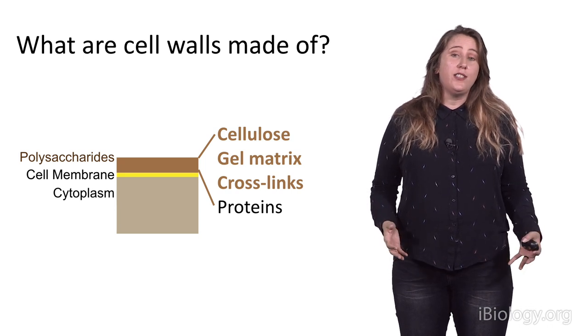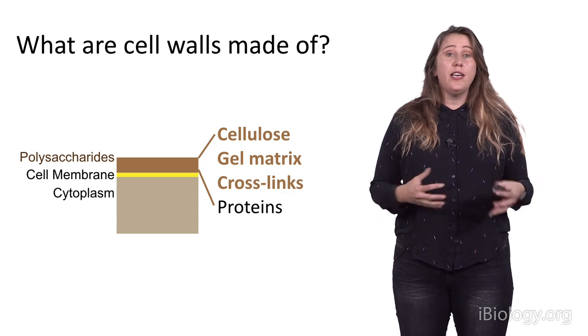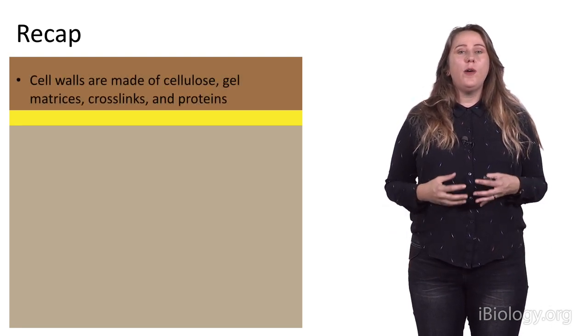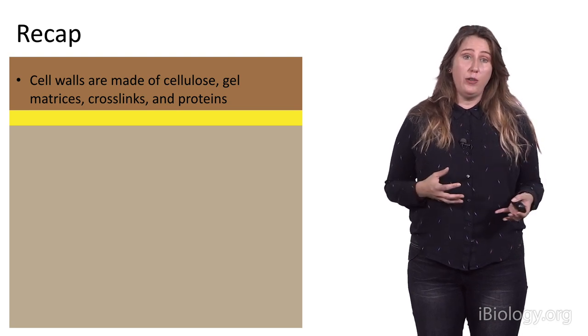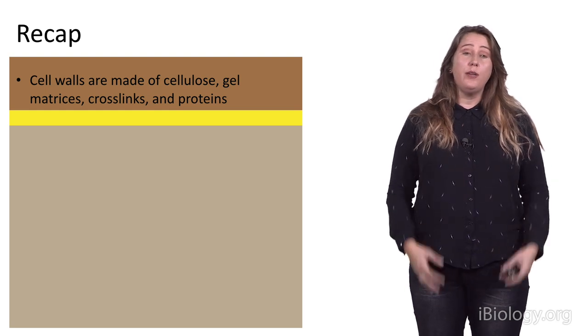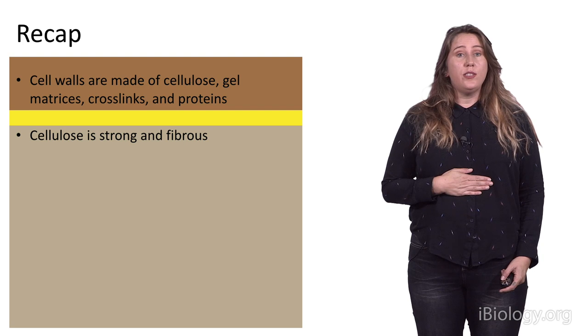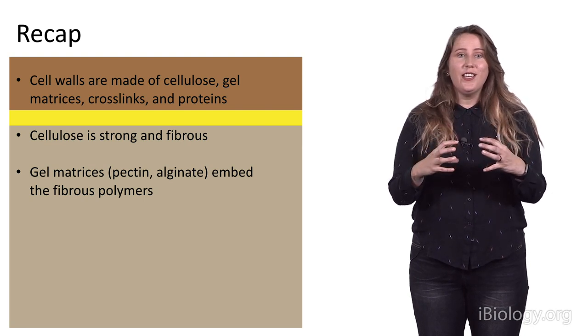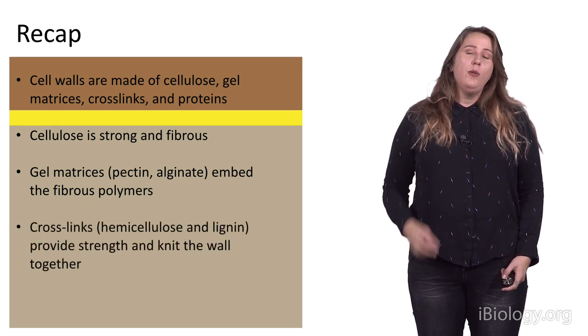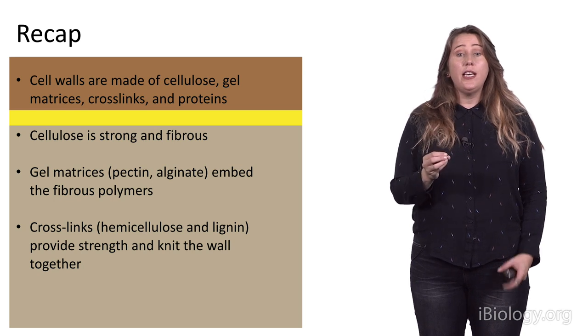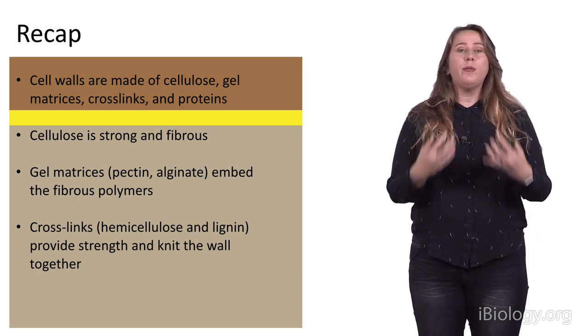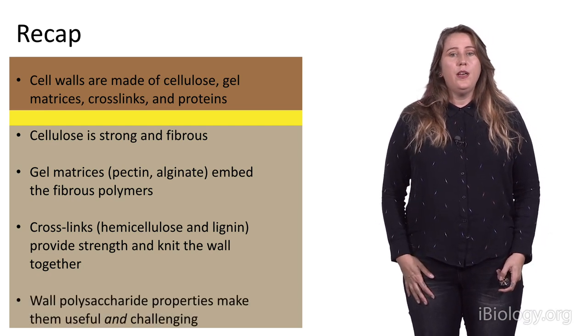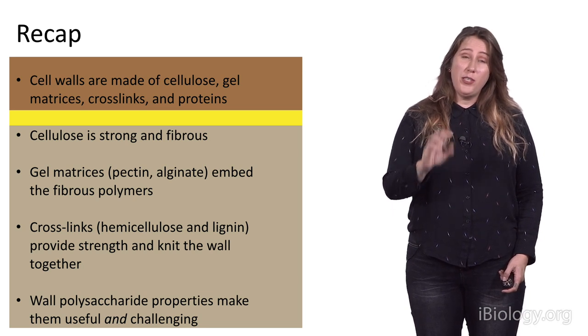So, now we know that cell walls in plants, at least, are basically made up of cellulose embedded in a gel matrix, cross-linked by hemicelluloses and lignin. So, let's recap again what we've learned so far. Plant cell wall structure. We know that cell walls are made of cellulose, gel matrices, cross-links, and some proteins. And these structures and the way the molecules are arranged are actually really important for their functions, for the plants, but also for us. So, cellulose is strong and fibrous, that makes it a great material. Gel matrices, those gels that really embed the fibrous polymers, their gelling is really important for us, for example, in our foods. We also learned that the cross-links, for example, hemicellulose and lignin, really provide strength and knit the wall together. And so all three of these types of components are required for the cell wall to perform its function, but we've interestingly found ways to use all three of these types of components. So, the wall polysaccharide properties make them both useful, but potentially also challenging.